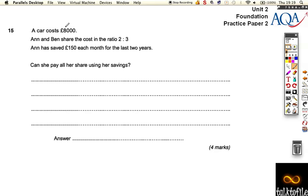So, a car costs £8,000. Anne and Ben share the cost in a ratio of 2 to 3. Anne has saved £150 each month for the last two years. Can she pay her share using the savings? Well, the first thing to do is notice that there are five parts, and that must be that the whole cost of the car is £8,000.